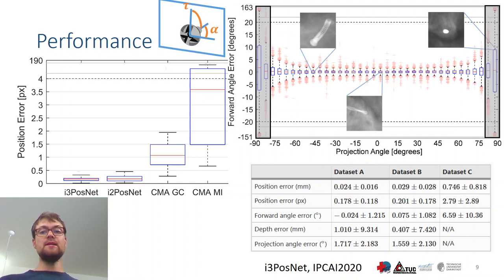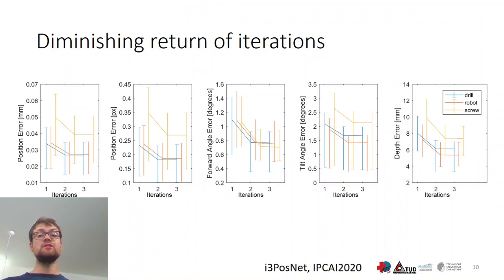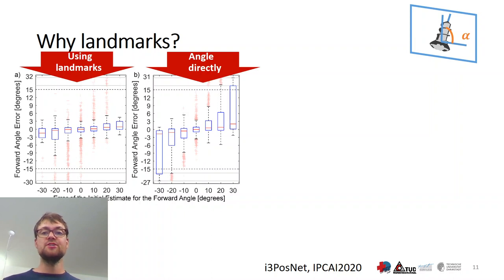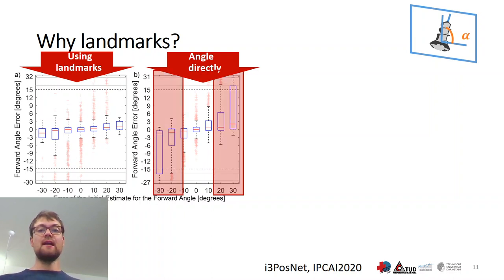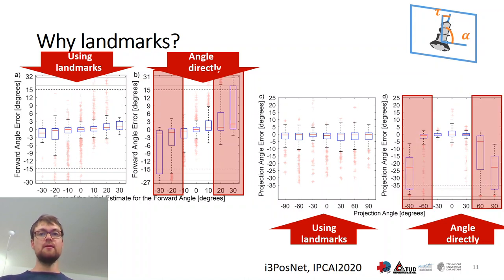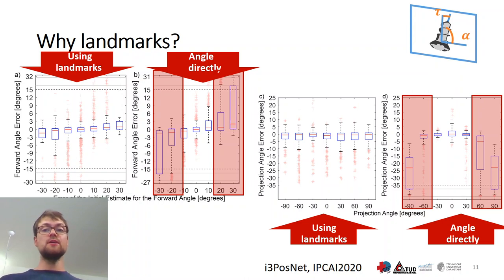We observed diminishing returns for all error measures with increasing iteration count, leveling out at iteration 3 — which is why we chose three iterations. One interesting design decision was not to predict the angles directly, but to predict landmarks instead. Comparing landmark-based prediction with direct angle prediction, larger errors in the initial estimate yield larger errors in the output for the forward angle alpha. Looking at the projection angle tau, the trend of underestimation seen with direct angle prediction does not transfer to landmark-based prediction. So using landmarks is superior to direct prediction.